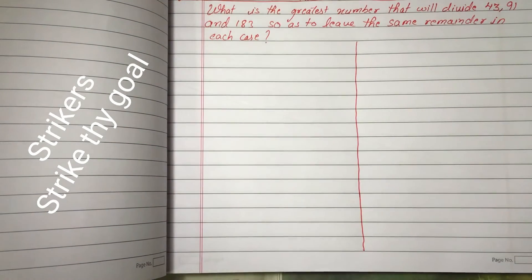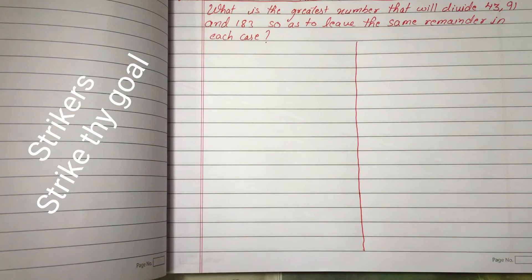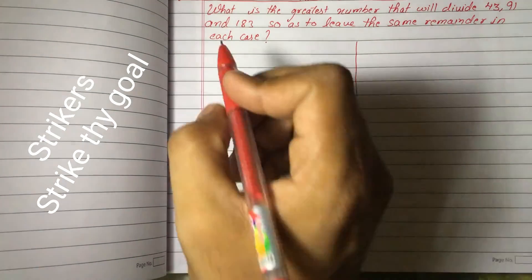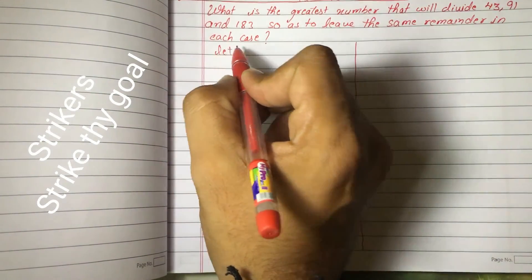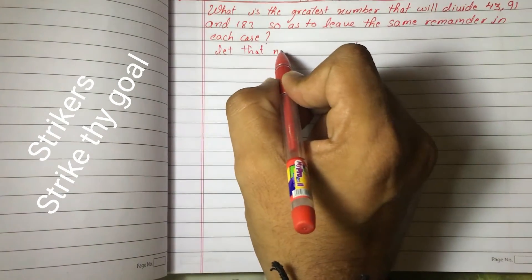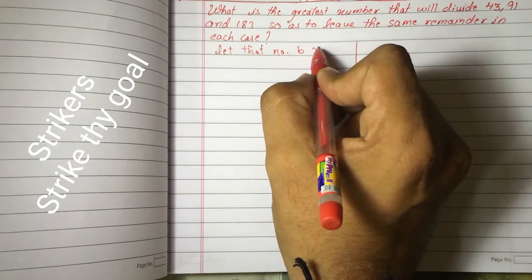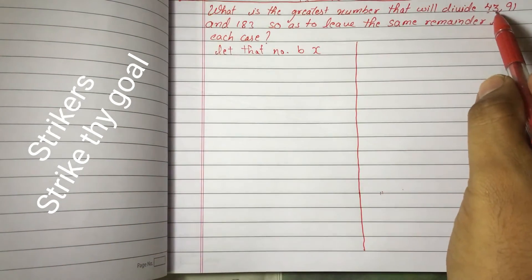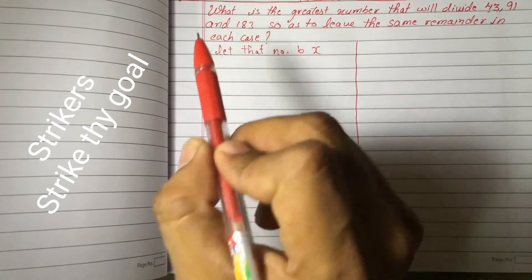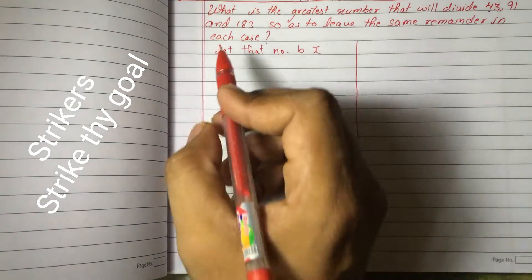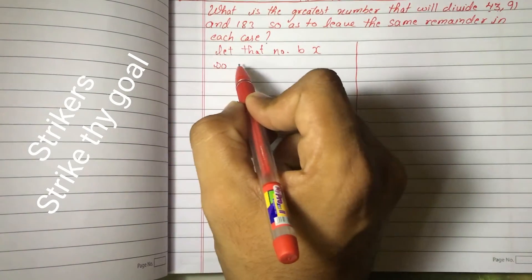The first problem is: what is the greatest number that will divide 43, 91, and 183 so as to leave the same remainder in each case? Let us find the greatest number that will divide 43, 91, and 183 and leave the same remainder. Let that number be X, which divides 43, 91, and 183 and leaves the same remainder, say R, in each case.